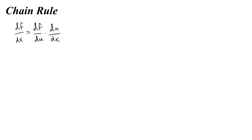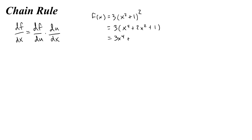Let's do an example. Let's say you had some function f of x equals 3 times (x squared plus 1), the whole thing squared. You could simplify this expression and then take the derivative: 3 times (x to the fourth plus 2x squared plus 1), which gives 3x to the fourth plus 6x squared plus 3. Then you take the derivative: df/dx is 12x cubed plus 12x.